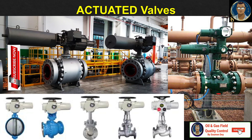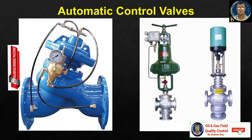Actuated valves are usually connected to electrical motors, air or pneumatic systems, hydraulic systems or solenoids. These valves allow remote control and automation for high accuracy or large scale applications. Automatic valves are those which get activated only when specific flow conditions are met. For instance, check valves closing during back flow, or pressure release valves that get activated when an over-pressure condition is detected.